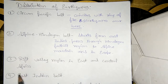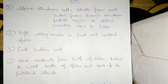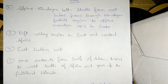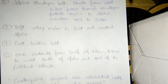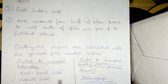The third is the Rift Valley region in East and Central Africa. A rift is an uplifted structure — not a mountain, but a specific geological structure. The fourth is the East Indian Belt. The fifth has no specific name but extends from the Gulf of Aden, turns west, goes south of Africa, and reaches up to the Falkland Islands.